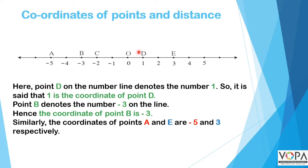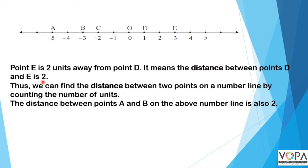Point D on the number line denotes the number one, so one is the coordinate of point D. Point B denotes the number minus three, so the coordinate of point B is minus three. Similarly, the coordinates of point A and E are minus five and three respectively.